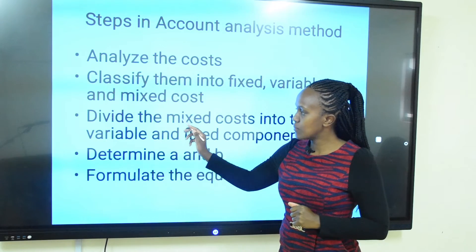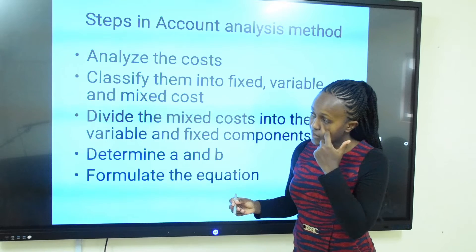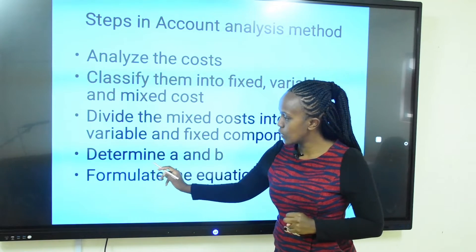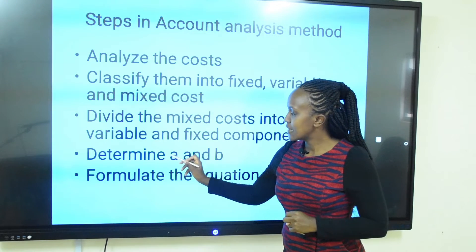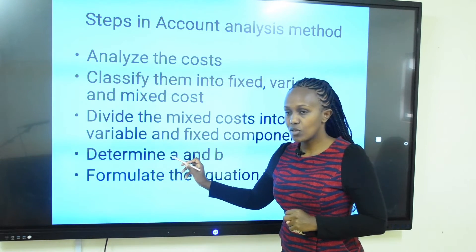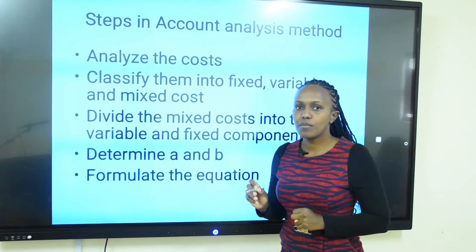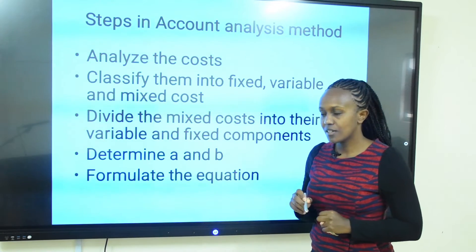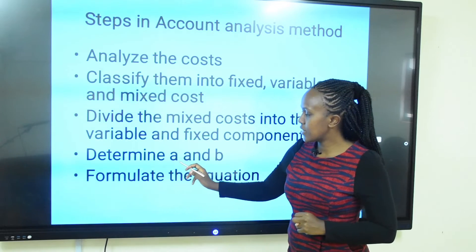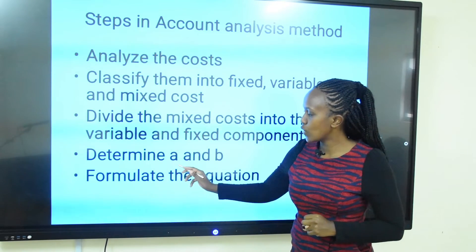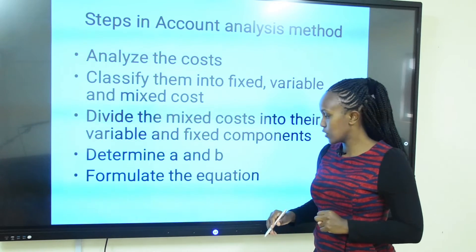You have to get both components — fixed and variable. Having done so, what we are determining is A and B. From our equation, A represents the total fixed cost and B represents the variable cost per unit. Once you get the variable cost, divide to get variable cost per unit. Having A and B, we can formulate a cost equation.